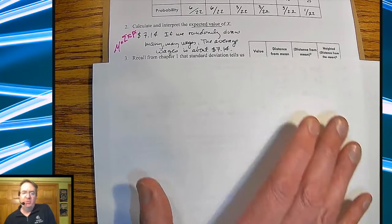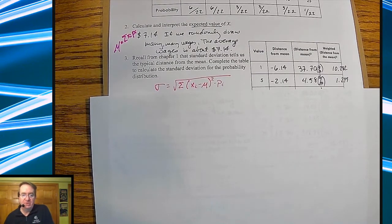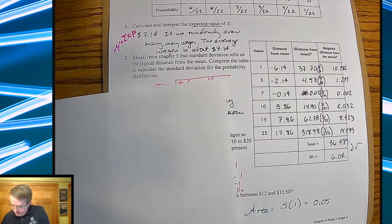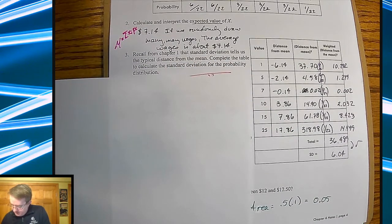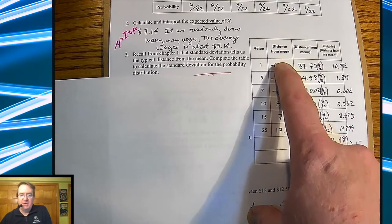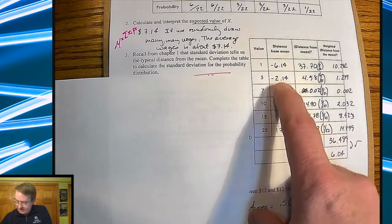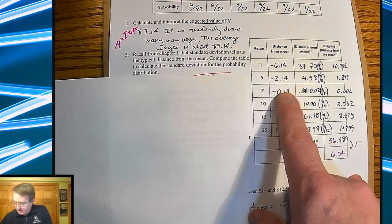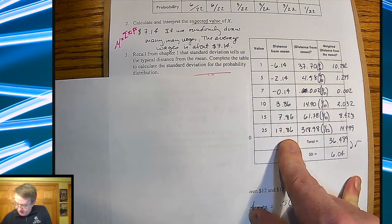Now we go back, way back to Chapter 1 and review standard deviation. And so what ends up happening is, before we worry about this, we go over here and we take all of our values here and we do distance from the mean. So my mean is $7.14, so 1 minus 7.14 is negative 6.14, etc. So those are all my values. And then you square the distance from that.